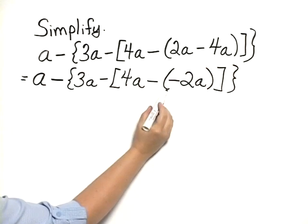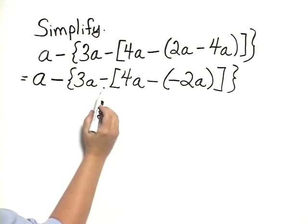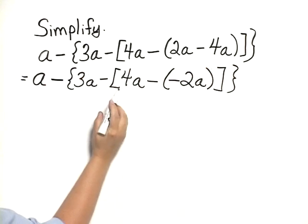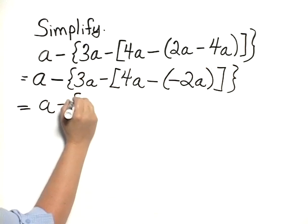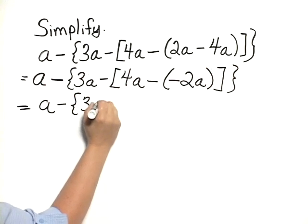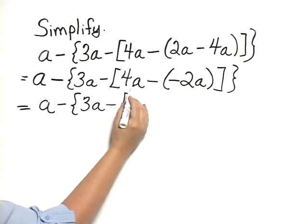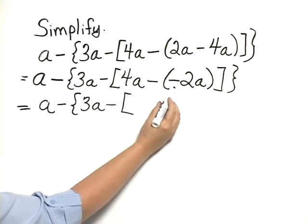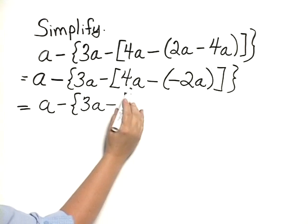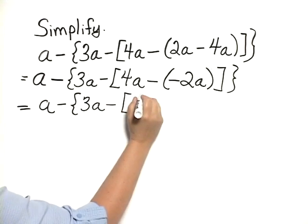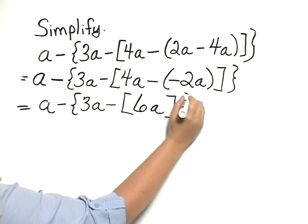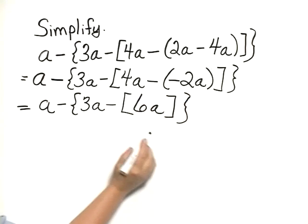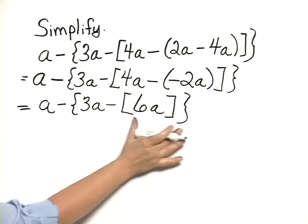Now I've simplified what's inside the innermost grouping symbol, I'm now going to work with the brackets. So I have A minus 3A minus, then I have 4A minus the negative 2A, which is the same thing as 4A plus a positive 2A, which would give me 6A. And notice that my parentheses are gone, I just have these brackets here now and the braces.